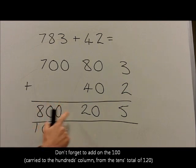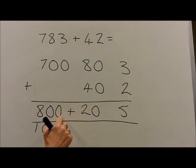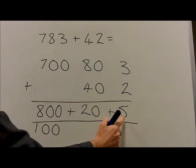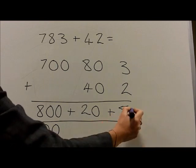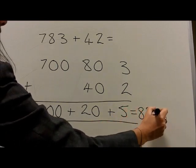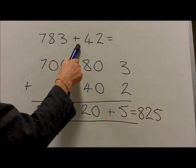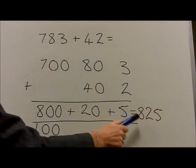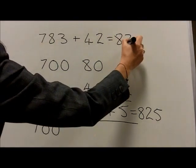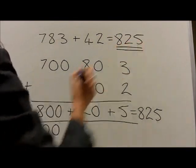We then add back the partitions, so we have 800 plus 20, which is 820, plus 5, which equals 825. Therefore, 783 plus 42 equals 825, which is the final answer.